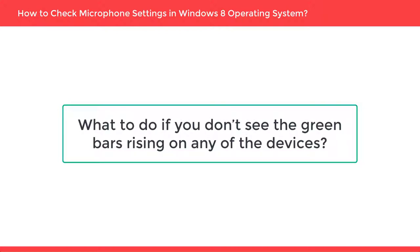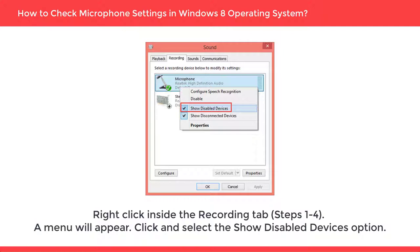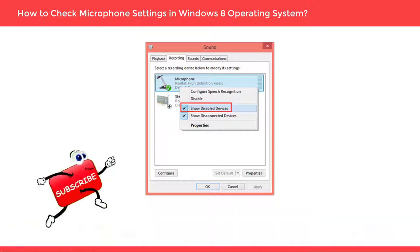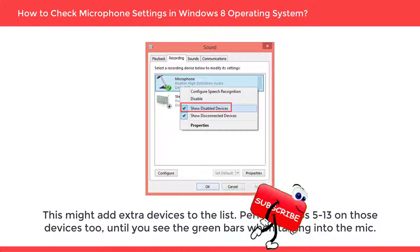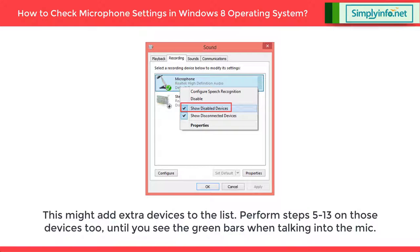If you don't see the green bars rising on any of the devices, right-click inside the Recording tab. A menu will appear — click and select the Show Disabled Devices option. This might add extra devices to the list. Perform the earlier steps on those devices too until you see the green bars when talking into the mic.